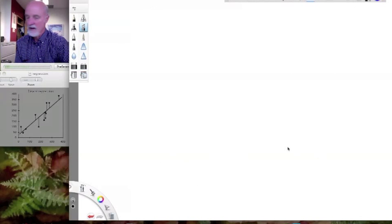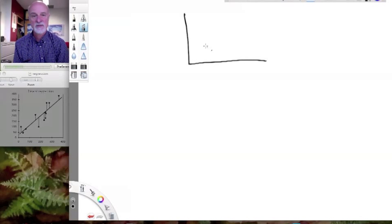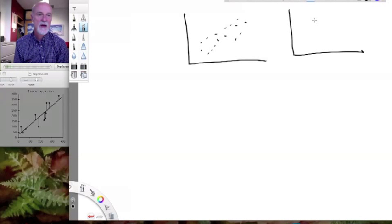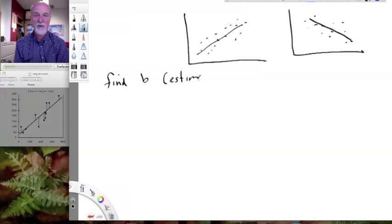The bottom line is, how do we estimate our slope? The first step in regression is estimating a slope. We want a formula that's going to take these point values and then find that slope. Once we find the slope, find b, which is our estimate of the parametric slope beta,